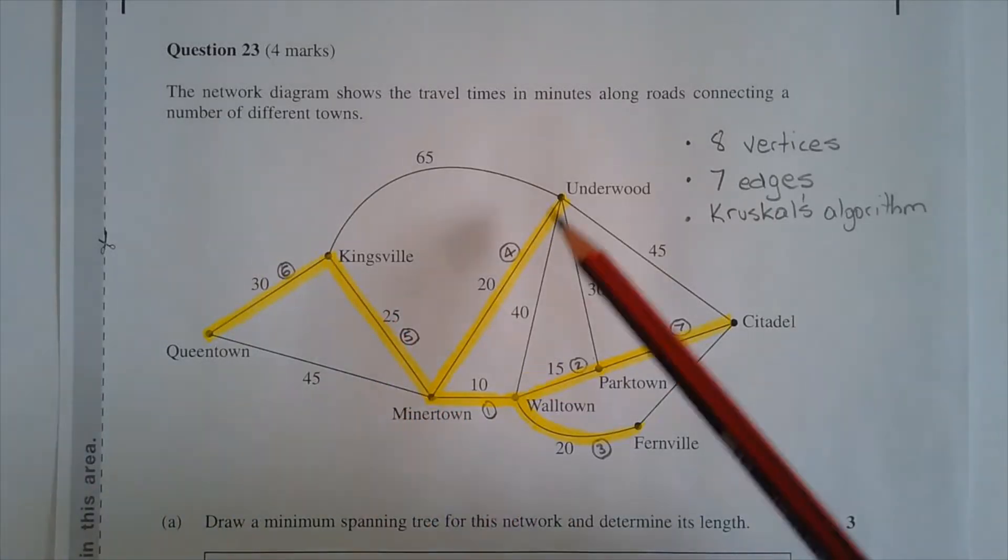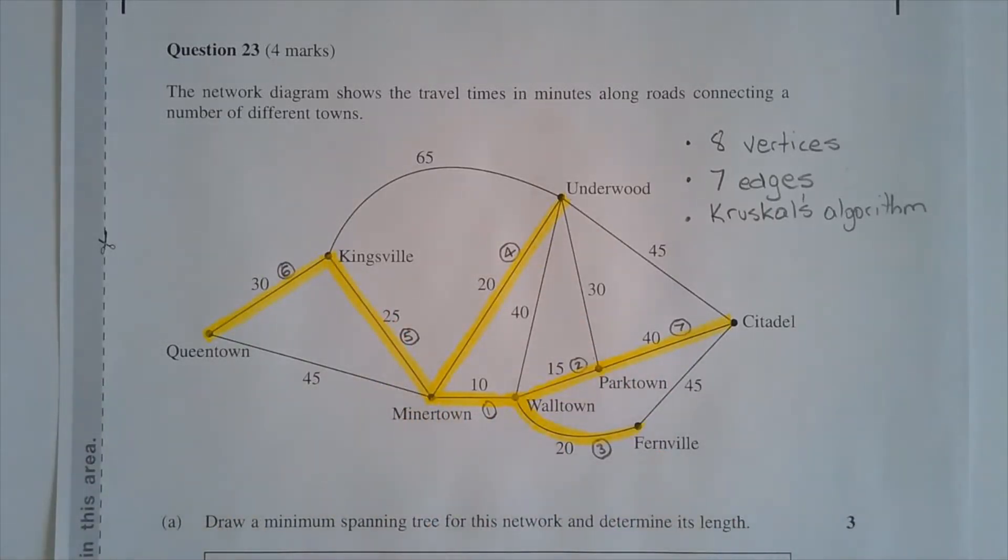The highlighted edges are the edges that I've chosen from the lowest weight to the highest weight, and the numbers here that are circled refer to the order in which the edges were chosen. So I've chosen this edge here between Minertown and Walltown, so that's number 1. This edge I've chosen as number 2. Number 3 is here, number 4 is here, number 5 is here, number 6 is here and number 7 is here.